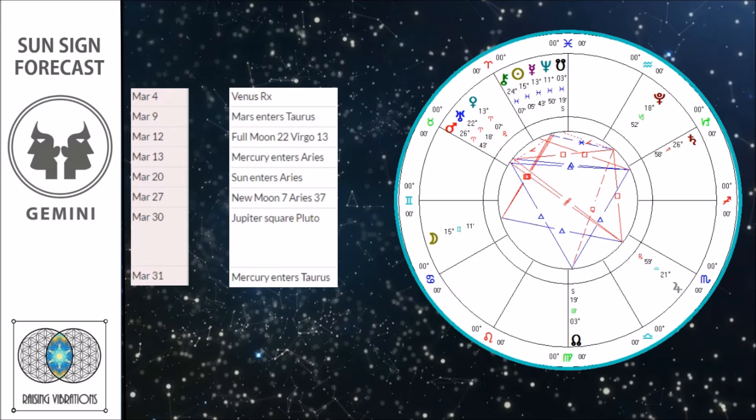The first place we're going to look is Pluto. Pluto is in your eighth house — it's been there since 2008. The nature of your emotional attachments has really been what's been influencing you on a deep level. You've been dealing a lot with emotional trauma around abandonment, loss, betrayal, and feeling disempowered.